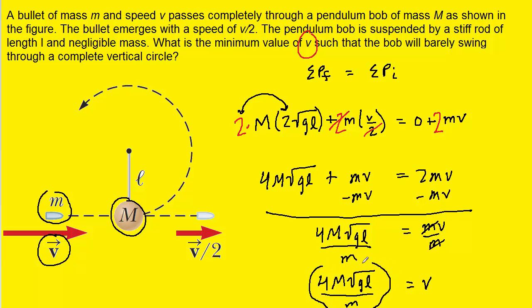Now, it's not possible to actually come up with a numerical value of the velocity v. We were simply asked to come up with an expression for its velocity. So this, indeed, is the minimum value of v, so that the bob will just barely swing through a complete vertical circle.